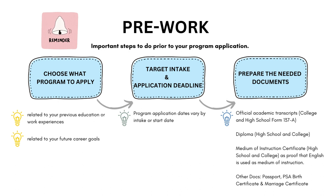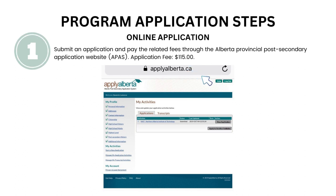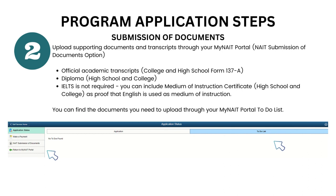Now let me walk you through the program application steps. The first step is to submit an application and pay the related fees through the Alberta Provincial Post-Secondary Application website, or APAS. I paid an application fee of $115 Canadian dollars. You will need to create a profile on the APAS website, choose the institution to which you want to apply, and fill out some information similar to what you see on your screen.